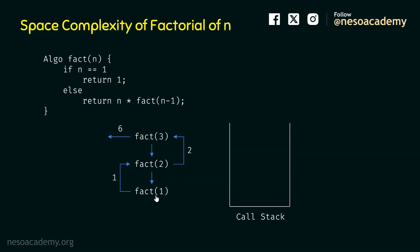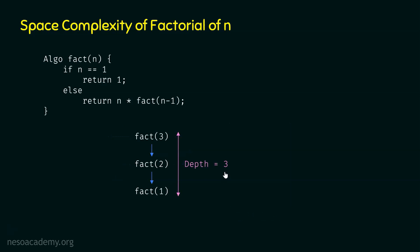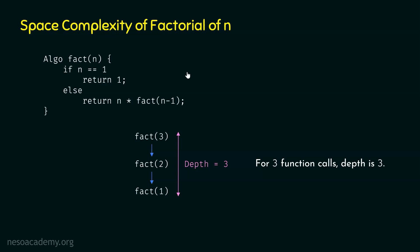Looking at the recursion tree, we can observe there are 3 levels, so the depth of the tree is 3. This depth indicates the depth of recursion. For 3 function calls the depth is 3, for 4 function calls depth is 4, and for n function calls the depth is n. The function calls proceed linearly from fact(n) to fact(n-1) to fact(n-2) and so on, giving depth equal to n.